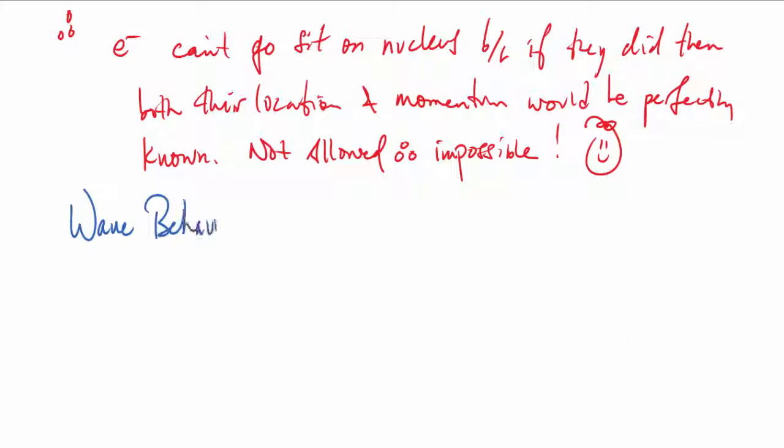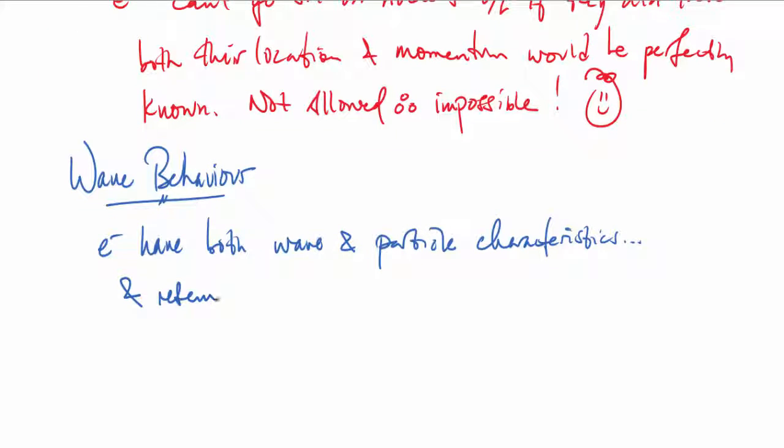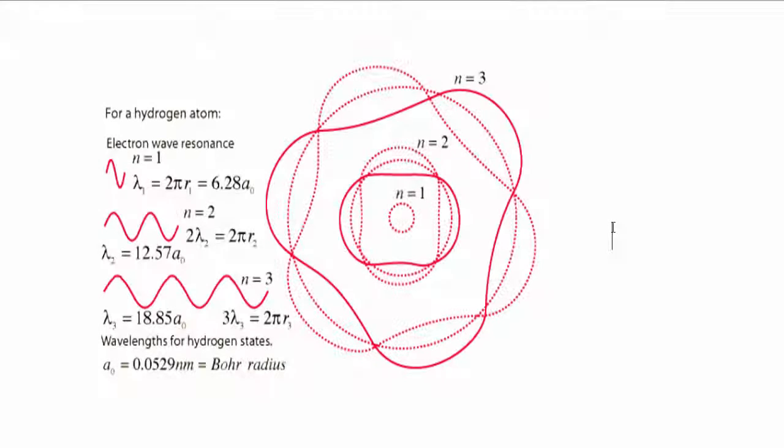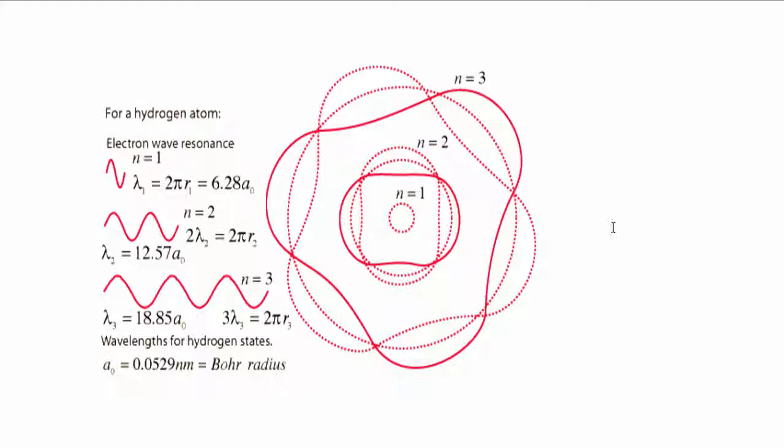As I commented earlier, electrons have both wave and particle characteristics. Because of this, they resemble nothing in the large world where we live. Don't feel too badly if you are not able to come up with a good intuitive understanding for the behavior of electrons—that shouldn't surprise you because electrons behave in no way like anything you have an intuitive understanding of.